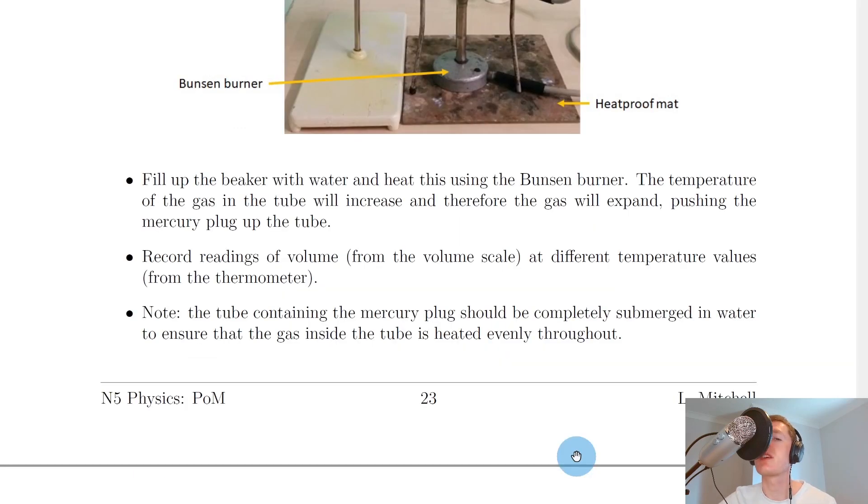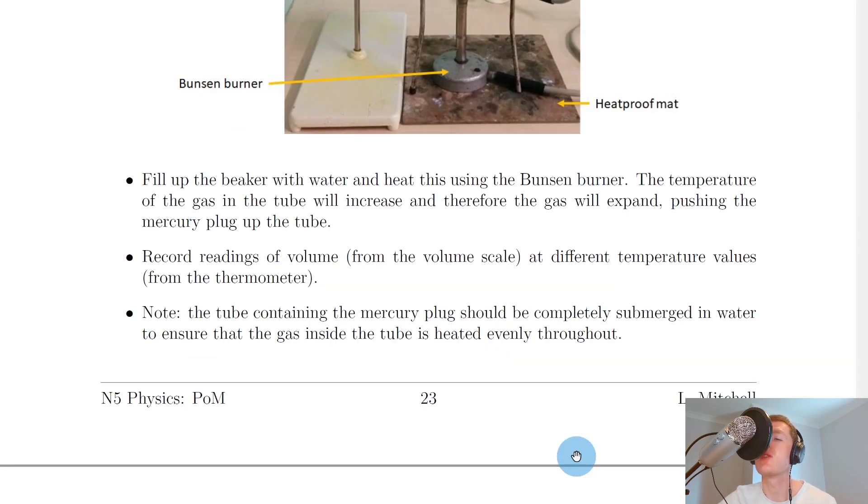I'm going to show you a quick simulation to help you visualize this. On the right hand side we can see particles in a container, our gas, a pressure gauge and a thermometer for our temperature scale. We've also got our volume scale on the side.